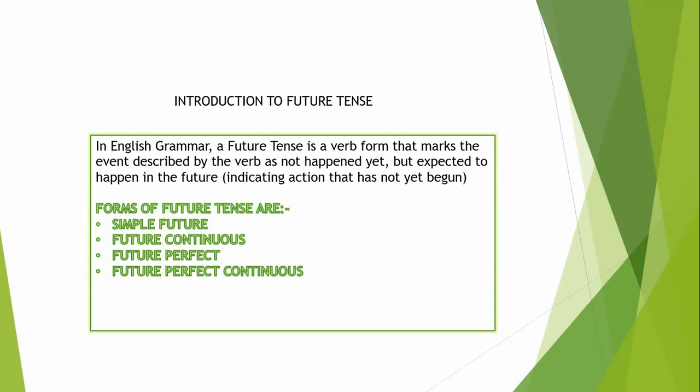The four forms of future tense are: simple future, future continuous, future perfect, and future perfect continuous.